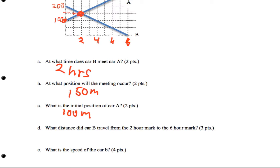Next, what distance did car B travel from the two-hour mark to the six-hour mark? At the six-hour mark, it ended up at zero. So the distance is from 150 to zero, which is 150 miles. By the way, if I asked you for the displacement, because it went backwards, that would be negative 150.